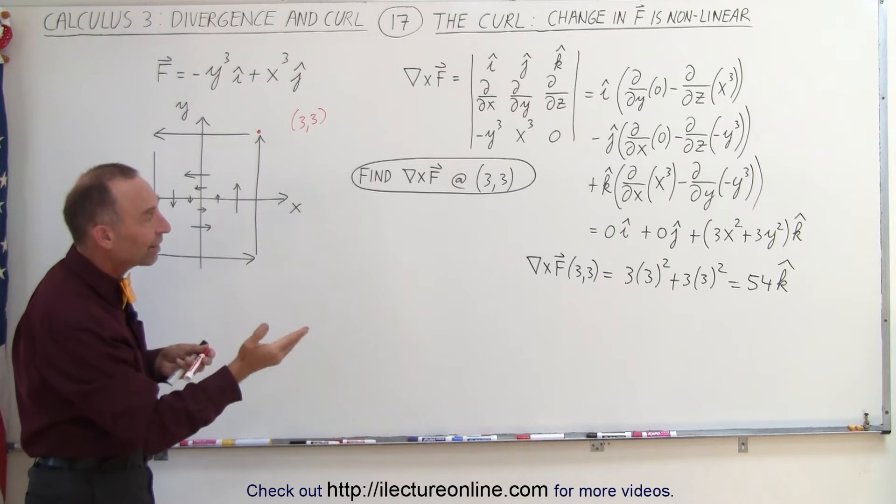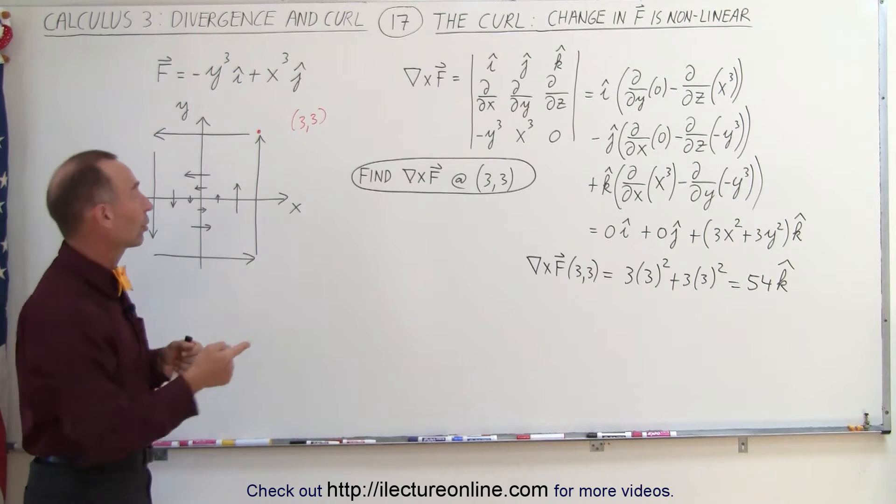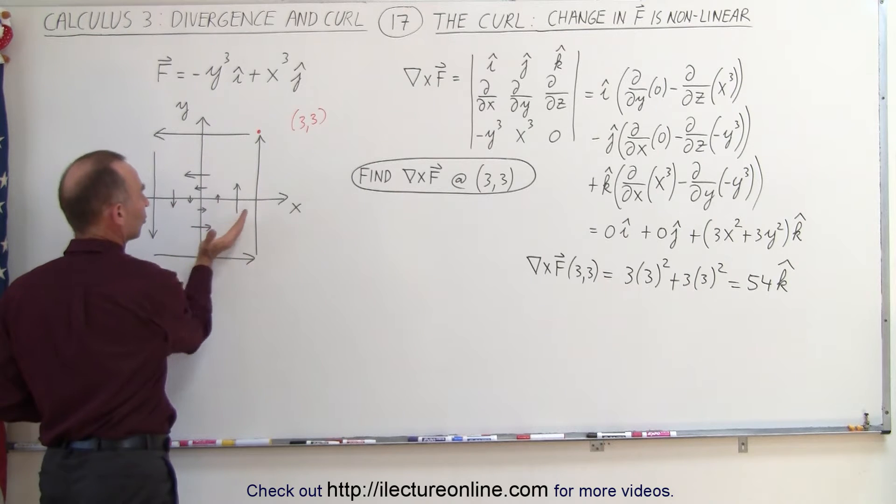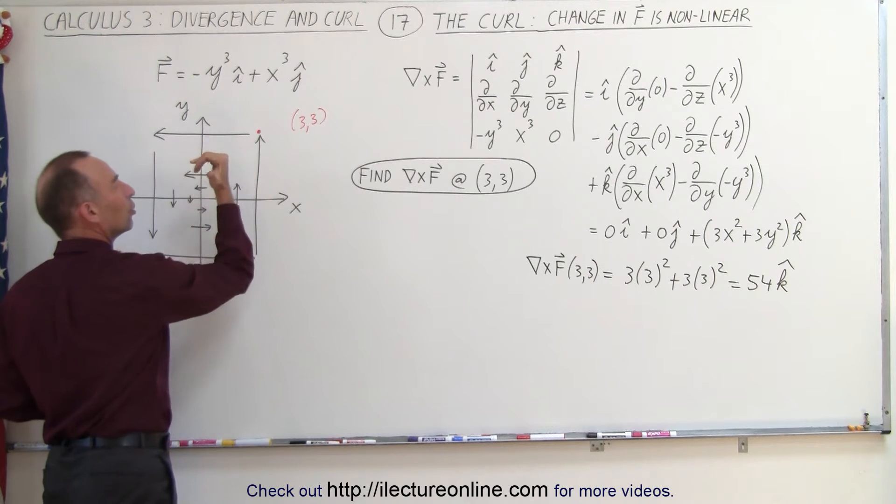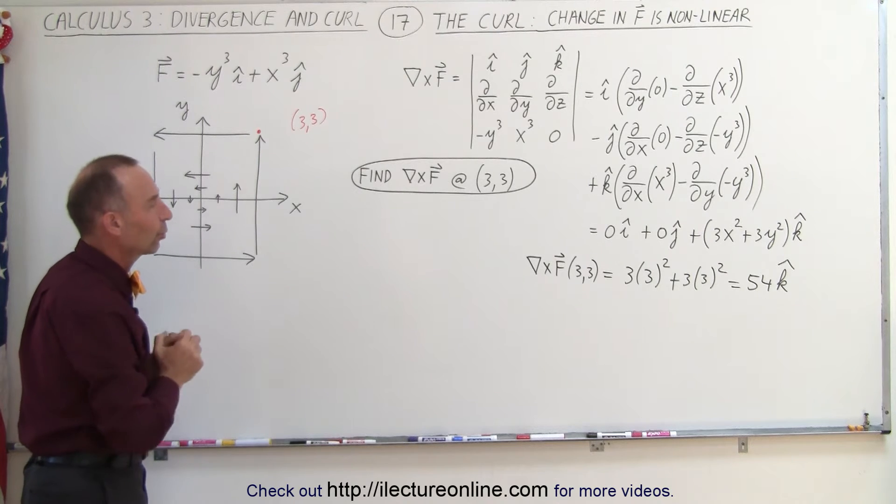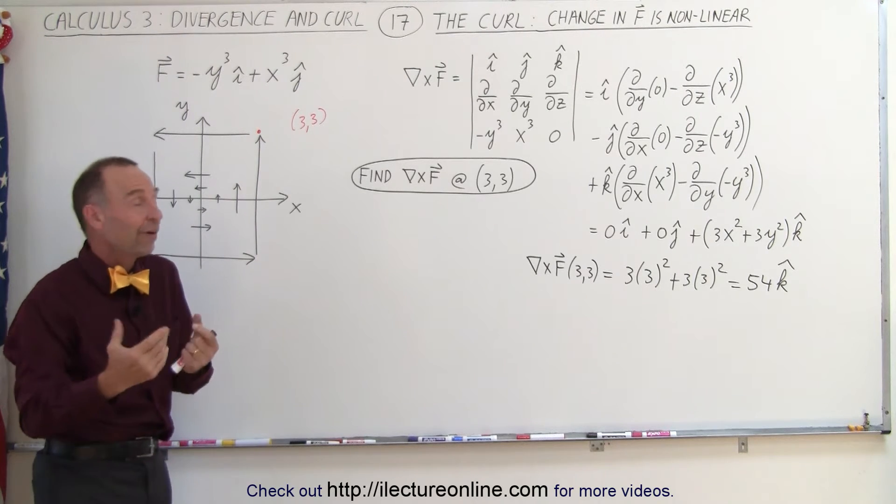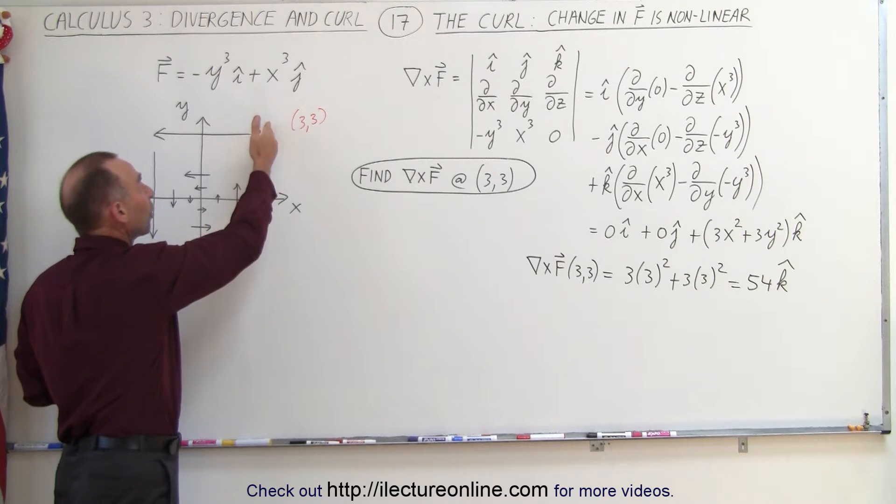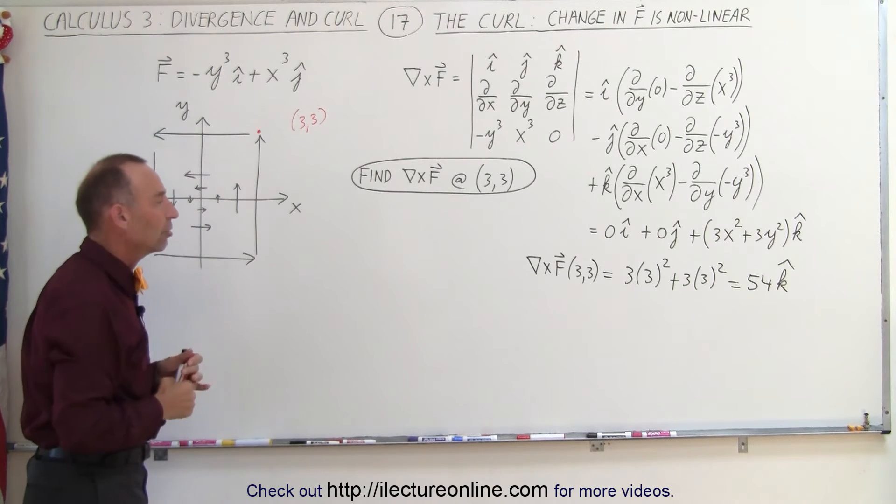And notice that the sign is positive, which means that the circulation is in a counterclockwise direction. Point your fingers in direction of circulation, your thumb will point in direction of the curl. So everything seems to work out. 54 is a large value because the vector field changes quickly at that particular location.